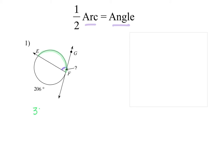360 minus 206 — because they gave us the other piece of the circle. We know an entire circle is 360. To find the angle they're asking for, we need this piece of the circle, so we subtract the 206. 360 minus 206 gives us 154. That is the arc measure. We are still not done — they are asking for the angle, which is half of the arc, so we divide by two. What they're looking for is 77 degrees.